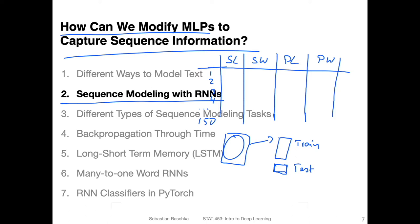When you evaluate your model on the test set, you should still get the same performance even if you shuffle all the records in the test set. This is a way of saying the model doesn't really use any sequence information — it considers the data as IID, meaning independent and identically distributed. Each training record is independent of each other and sampled from the same distribution.